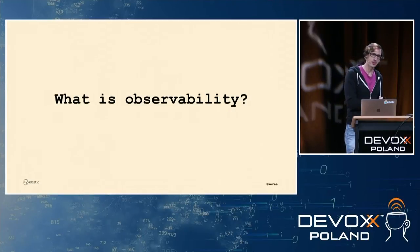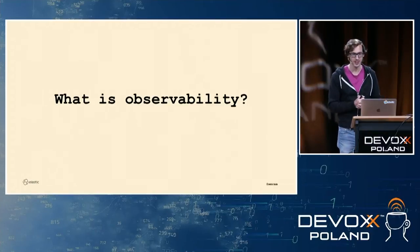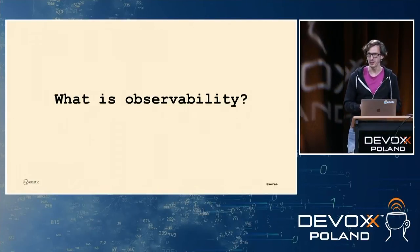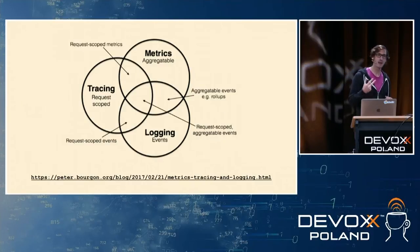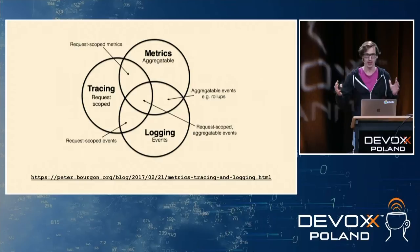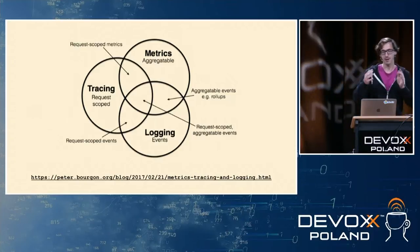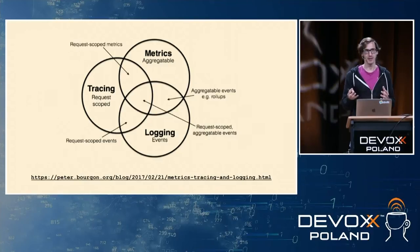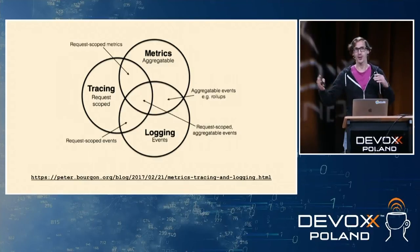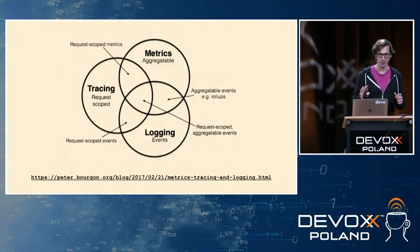The question that always comes up — because it's a fancy buzzword nowadays — is: what is observability? And a lot of people call logging, metrics, and traces the three pillars of observability. You mesh them up and that's observability. Or not, as we will discover in the next 30 minutes.